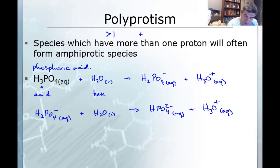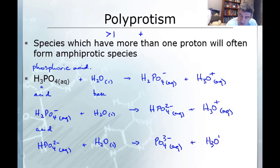And then of course we can do a third ionization which with the HPO4 2 minus. This is also acting as an acid, and it will combine with the H2O again acting as a base. This time forming the PO4 3 minus ion, the phosphate ion and another hydronium ion.